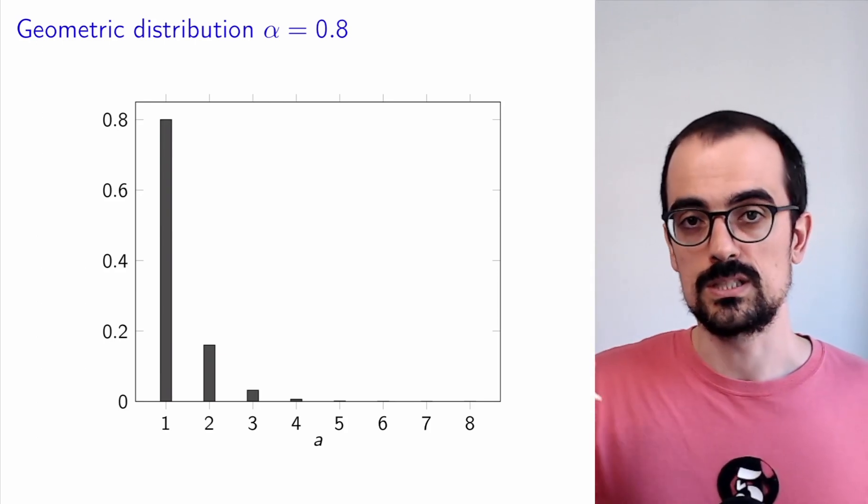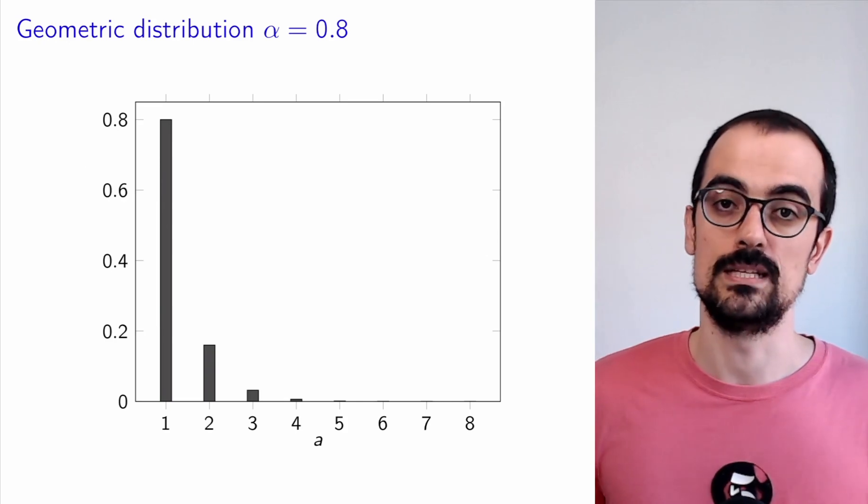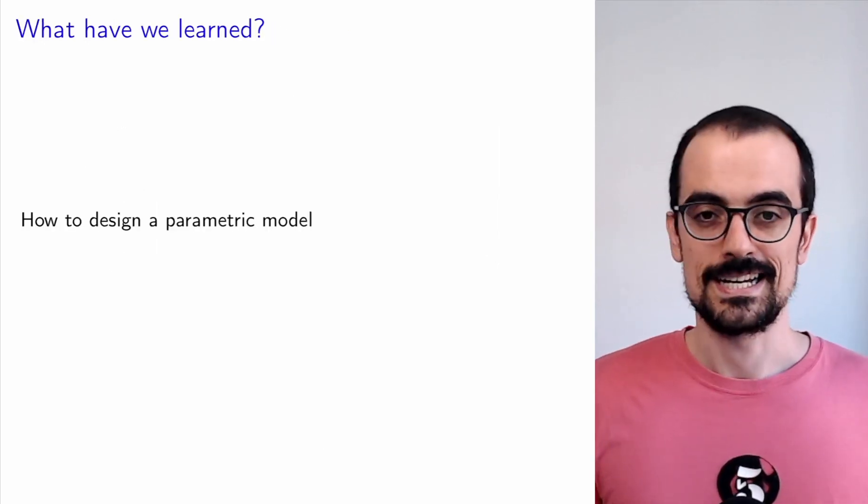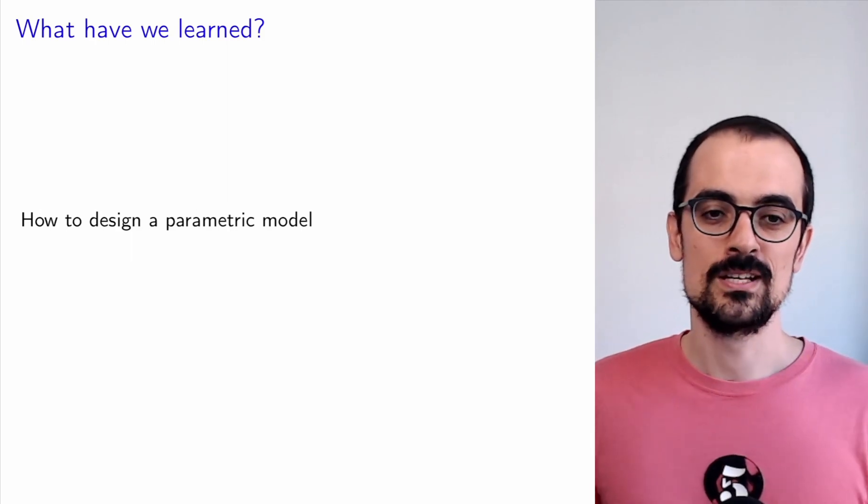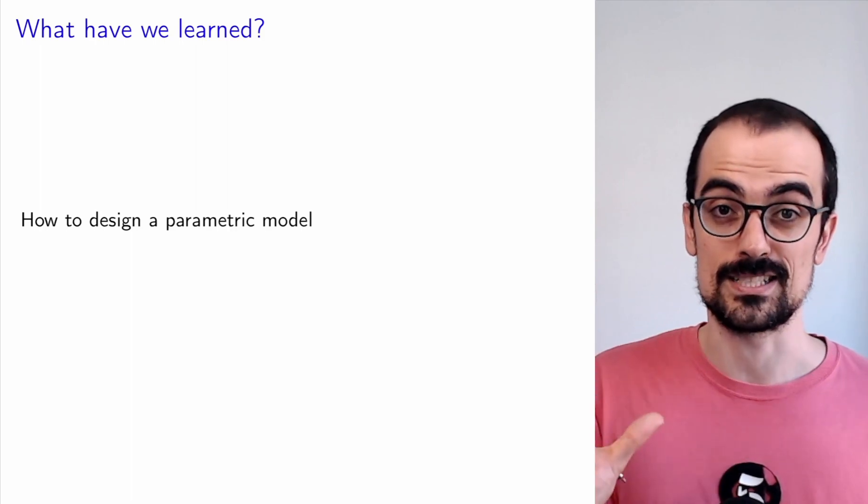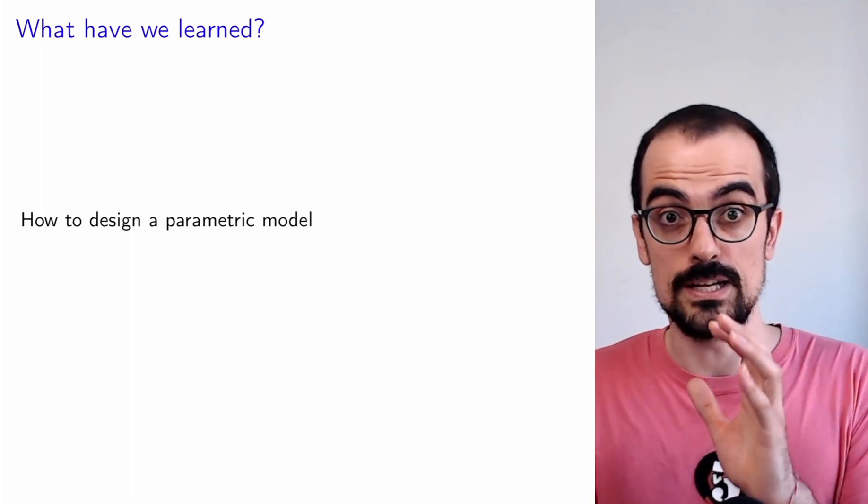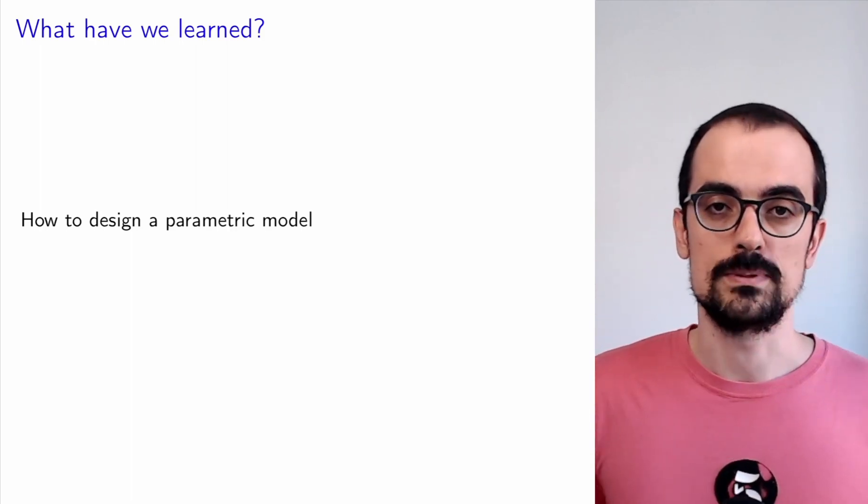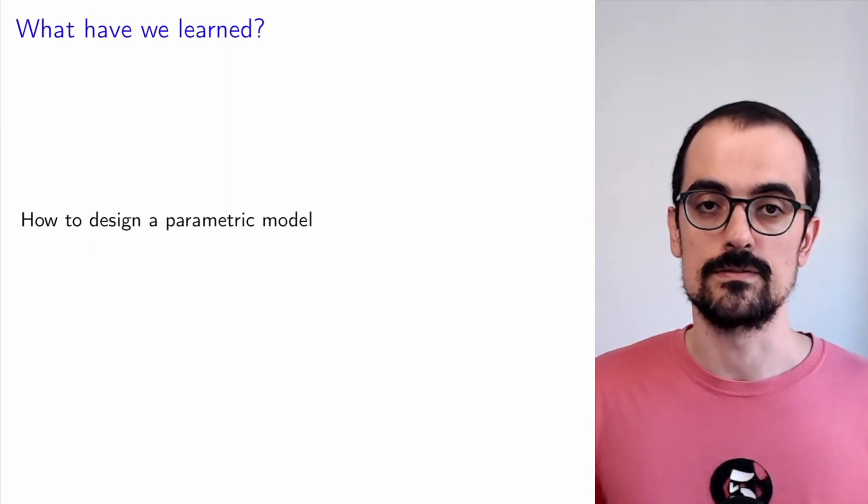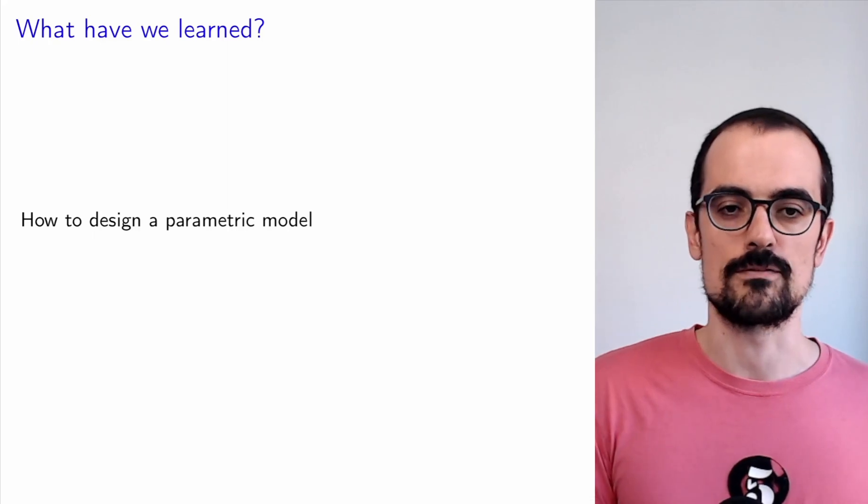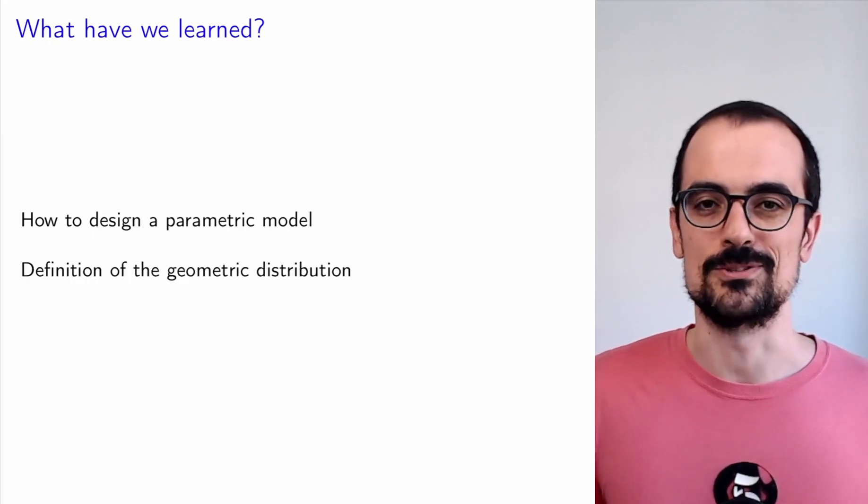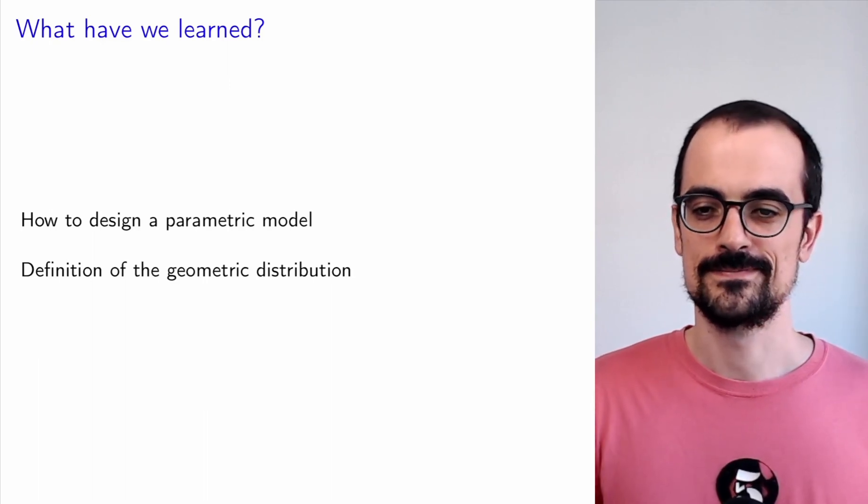And that's it. This was a super short video. We have learned how to design a parametric model by establishing certain assumptions which are not true but are hopefully reasonable, and allow us to obtain a model that can be fit stably from a small number of data, so that has a small number of parameters. And in the process we derived the geometric distribution. Thank you very much.